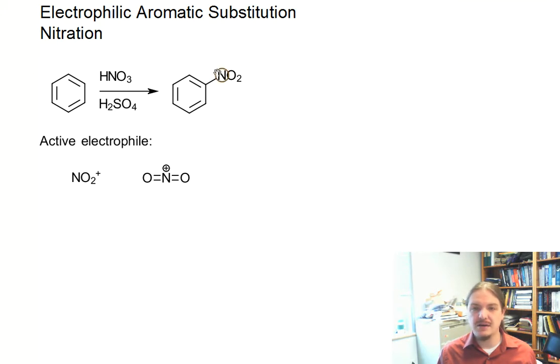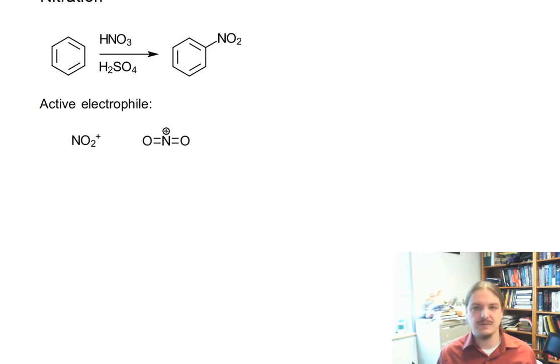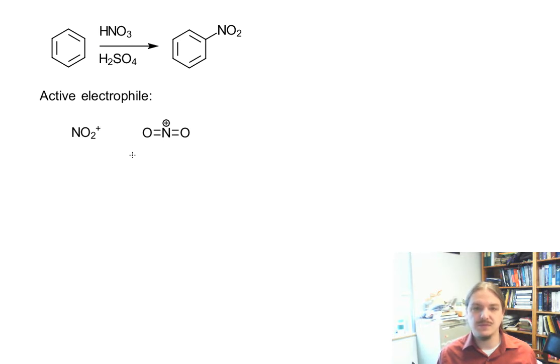As we go through these reactions, we'll find that often the electrophile looks very similar to the functional group that we're going to be adding. This nitronium cation is generated in the reaction of nitric acid with sulfuric acid.